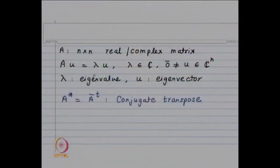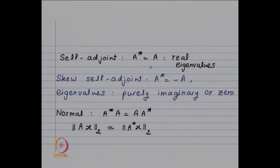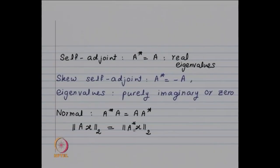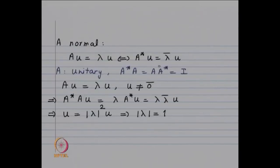Our notation: A is n-by-n, either real or complex. Au equals lambda u, where lambda is a complex number and u is a non-zero vector in C^n. A* equals A-bar transpose, the conjugate transpose. Self-adjoint means A* equals A — real eigenvalues. Skew self-adjoint: A* equals minus A — eigenvalues are purely imaginary or zero. For a normal matrix, A*A equals AA*, and one shows that the norm of Ax equals the norm of A*x, so Au equals lambda u if and only if A*u equals lambda-bar u.